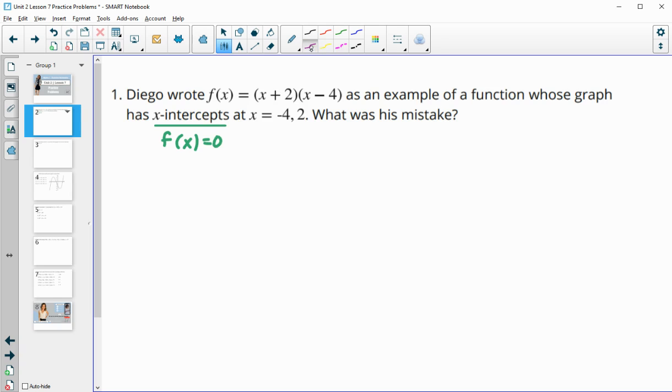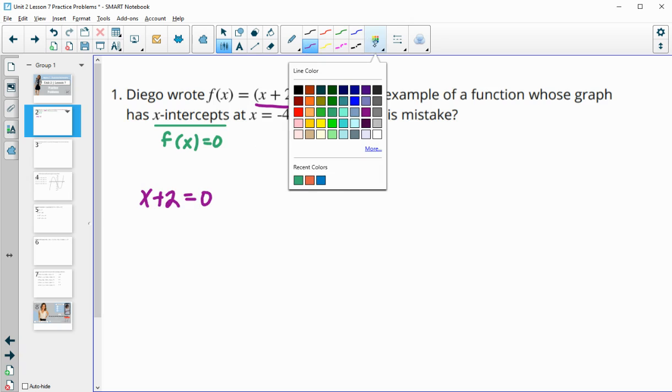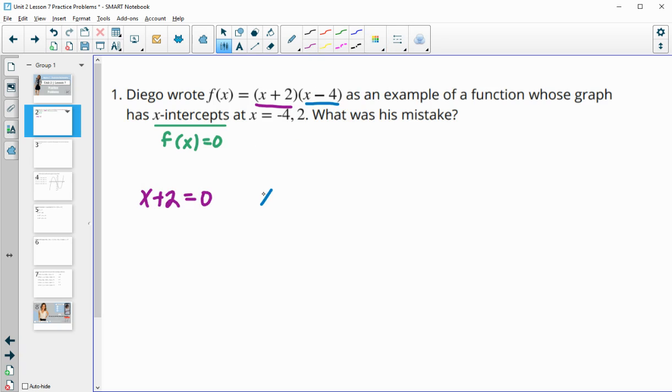In order for them to have x-intercepts, that's where the graph or the function needs to equal 0. When we multiply two numbers together and they equal 0, anytime you multiply two numbers together, either factor could equal 0. So we want to set x plus 2 equal to 0, and we want to set x minus 4 equal to 0, and then we need to solve these.